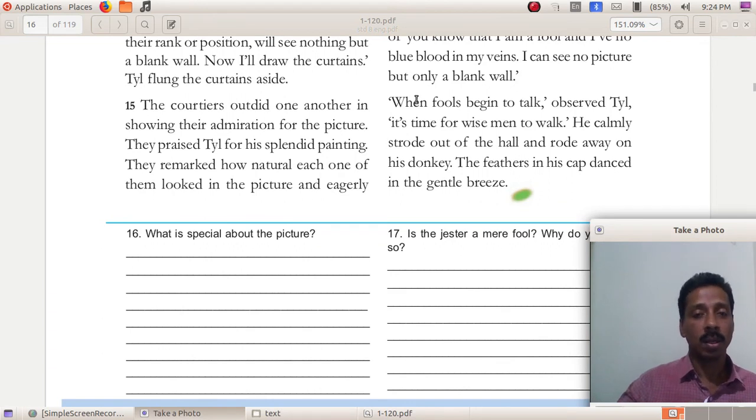He admitted that he had no noble blood. What was the remark of Till? When fools begin to talk, it is time for wise men to walk. It is meaningless to talk to foolish men. He calmly strolled out of the hall and rode away on his donkey. The feathers in his cap danced with the gentle breeze.